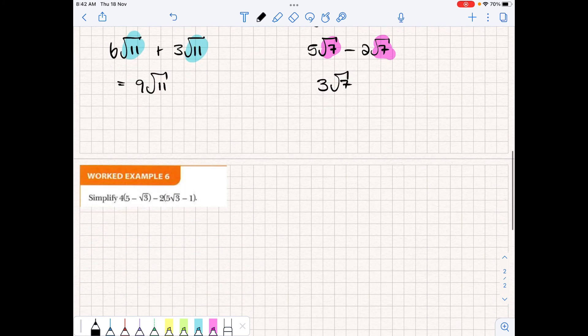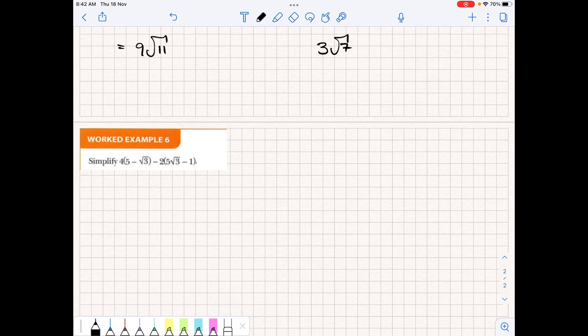And just like other forms of calculations, we can expand and simplify. So for this example here, we would first expand all the brackets out and get 20 minus 4 square root of 3. And then, keeping in mind, we have a negative 2 here, so we're going to multiply by minus 2. We'll get minus 10, so we're multiplying the number by the coefficient in front of the surd, not the surd itself.